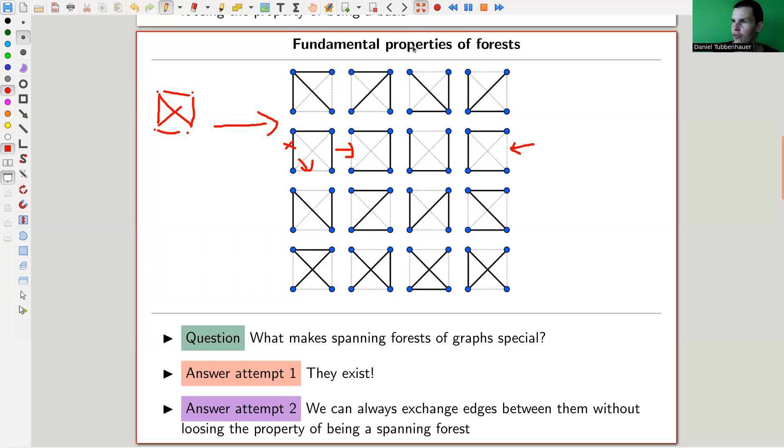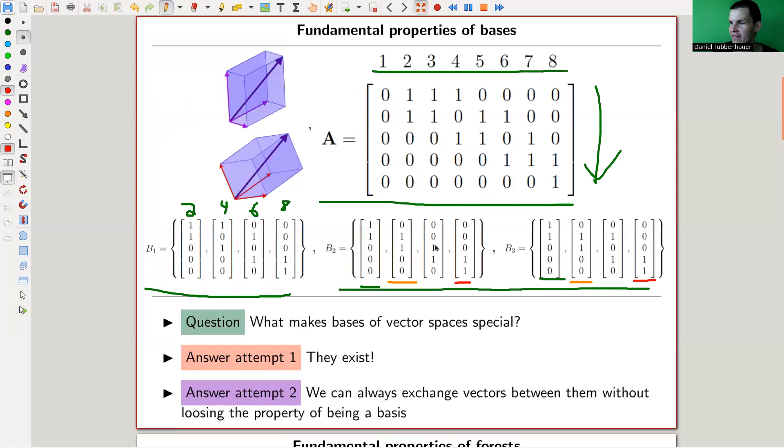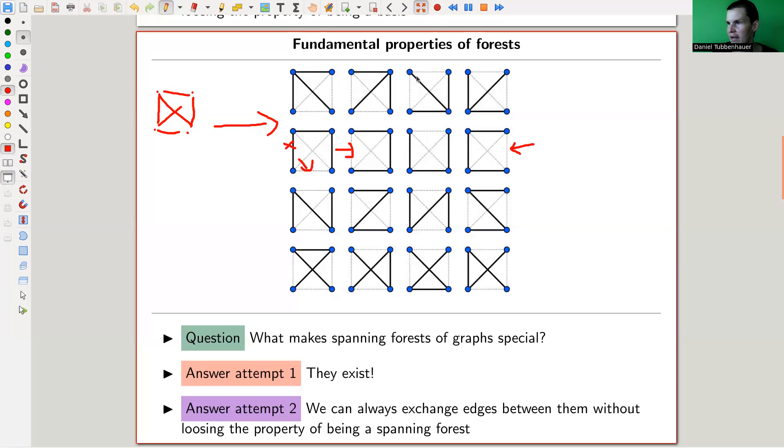In particular, observe that they all have the same size. So here all bases are of size 4. Here all spanning trees have three edges. And that kind of follows from this base-vector exchange property, which is one of the fundamental properties of forests as well, not just of bases.